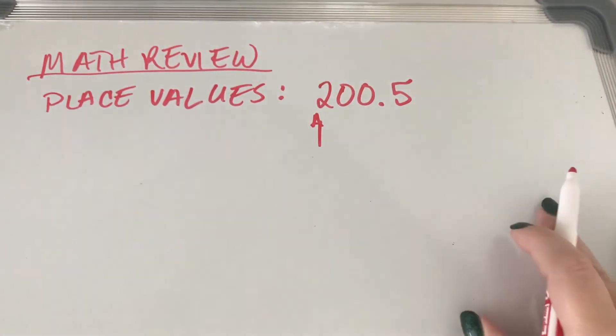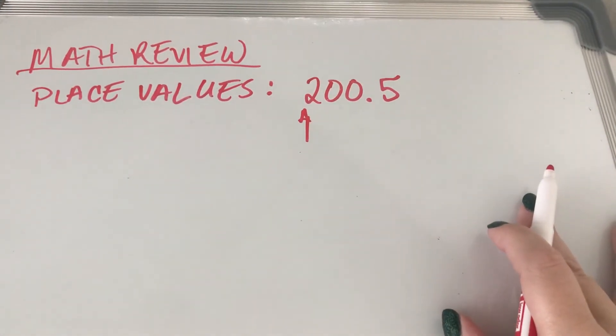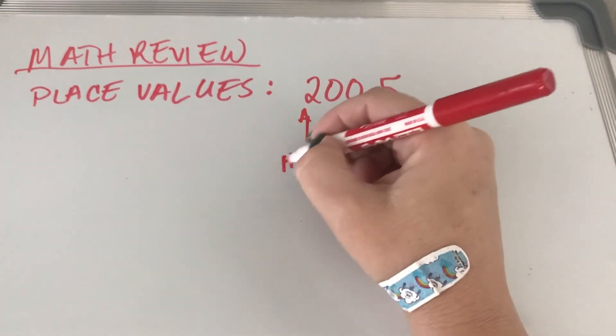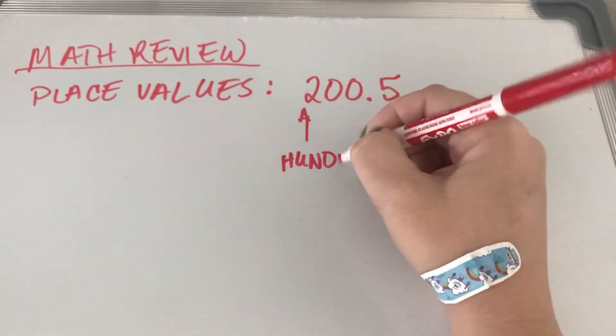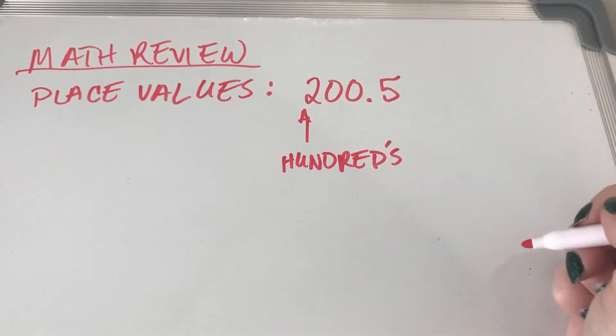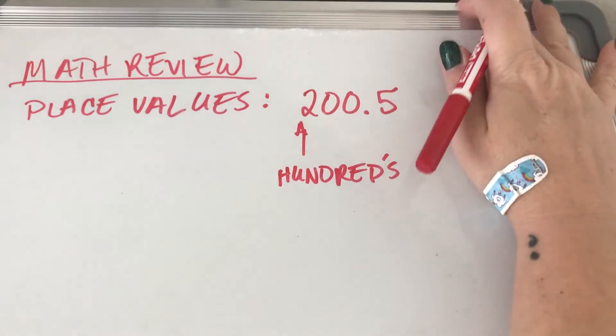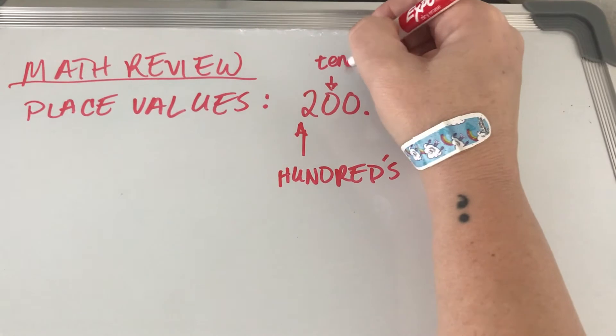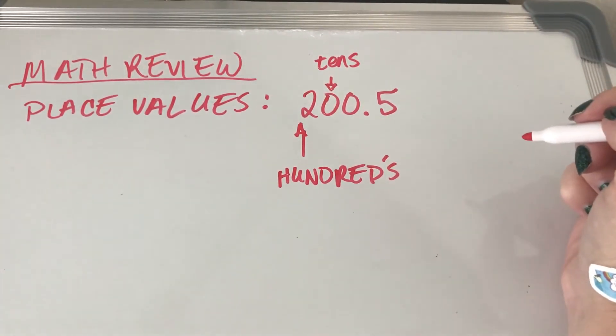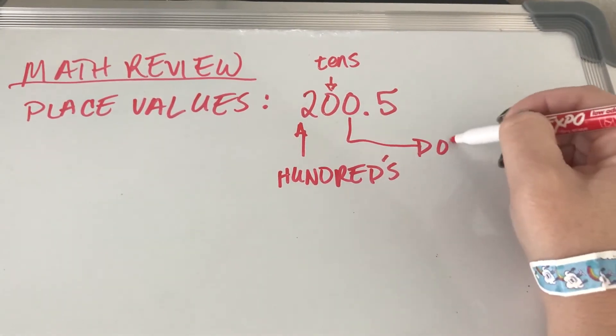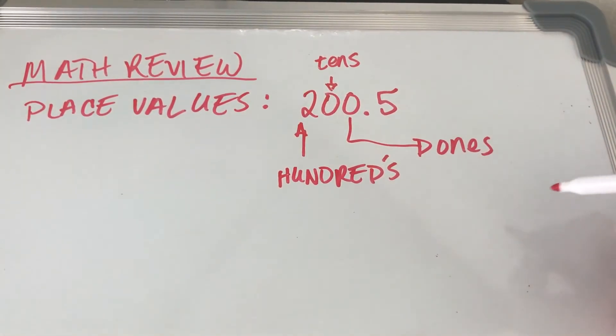Sorry, I'm getting lagged. Hundredths place, right? So the hundredths place, I would have the tens here, right? And the ones place here.